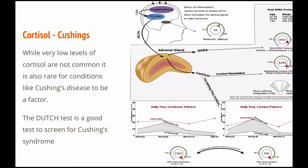Here's an example of very high cortisol — high production and very high free cortisol patterns that don't really change too much throughout the day and night. This is someone with Cushing's disease. Once again, this is a fairly rare disease, but it can happen and it can be picked up by the Dutch test.